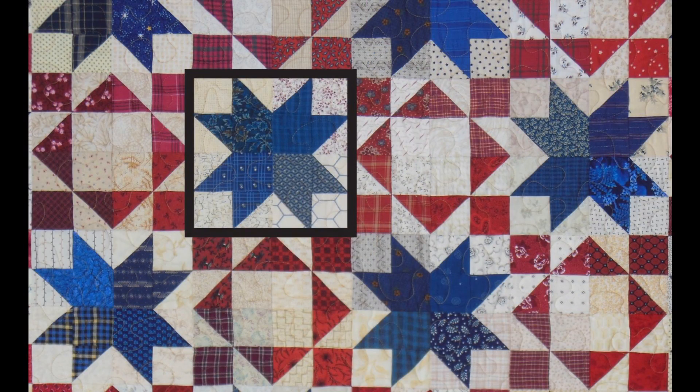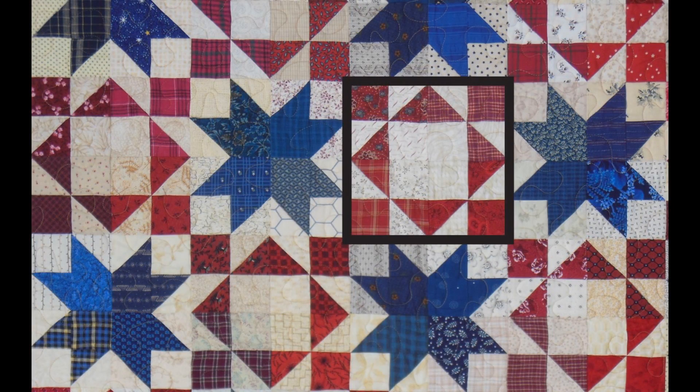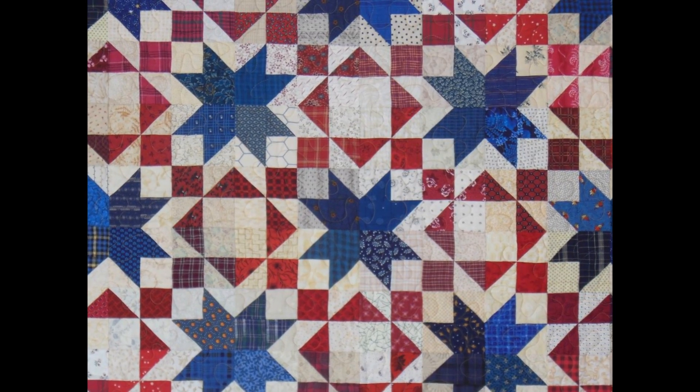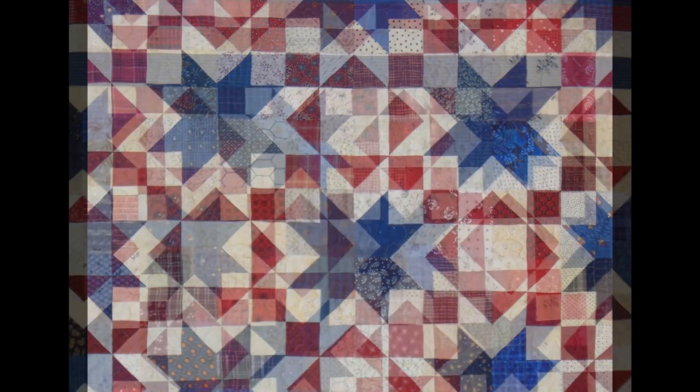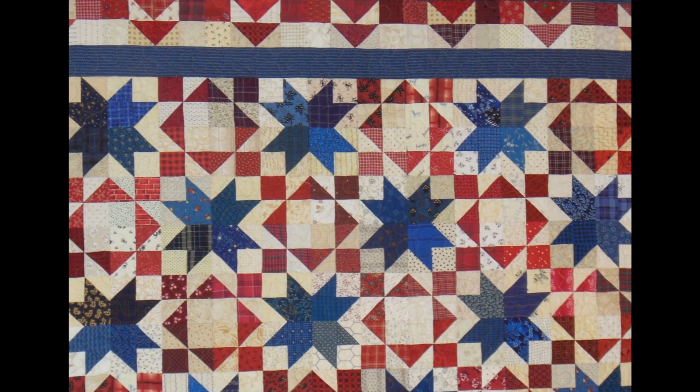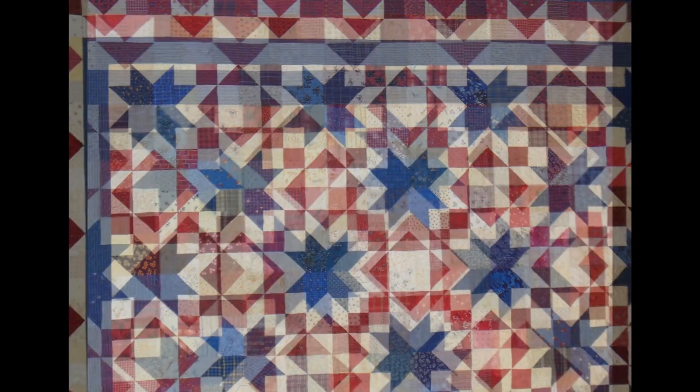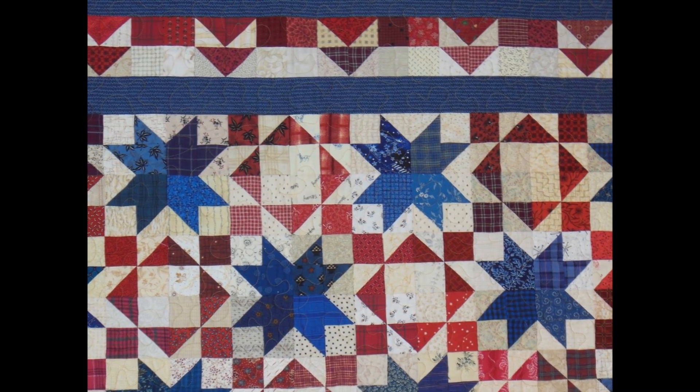This quilt contains two blocks, the blue star block and the red king's crown block. They work so nicely together it's sometimes hard to see where one block stops and the other block starts. I went with a patriotic theme for this quilt but of course it would look great in many different fabric combinations.